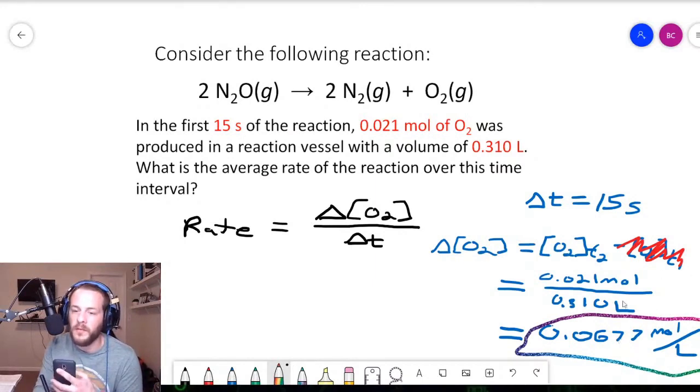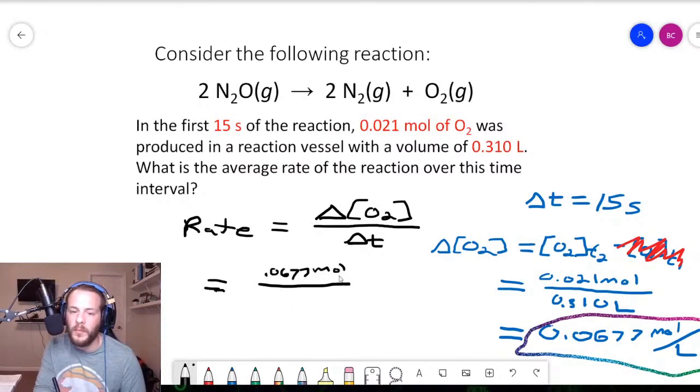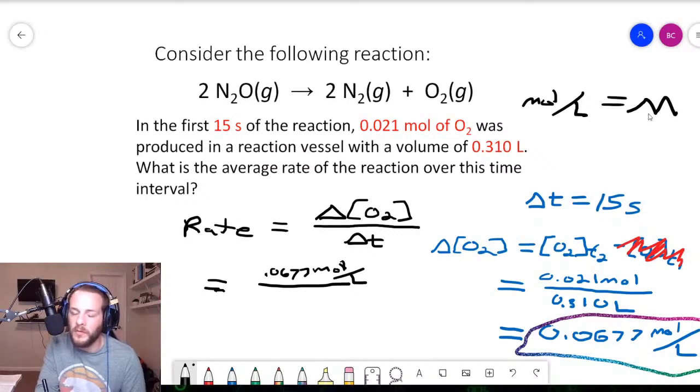So I'm going to circle that in this rainbow here. So 0.0677 moles per liter. And so now that we have that piece of information, we can simply plug that in as the numerator in this formula up here. And so switching back to my black pen here, we're going to get that the rate is equal to, so that delta concentration of O2, we just determined that that's 0.0677 moles per liter. And another way to, by the way, another way to represent moles per liter is just a capital M for molar. So moles per liter and capital M, those are the same thing. So oftentimes you'll see this capital M because it's a lot easier to write that than it is moles per liter. So 0.0677 moles per liter divided by the change in time, which of course is 15 seconds.